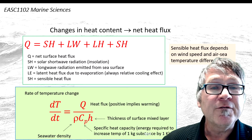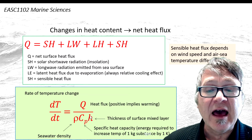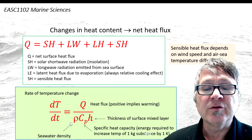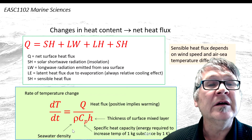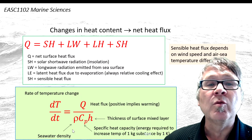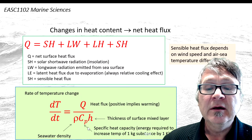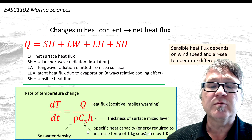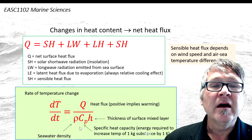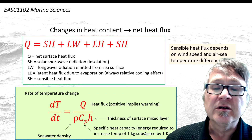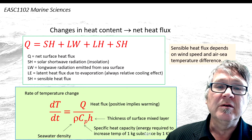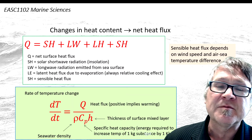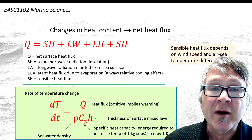How fast the temperature will decrease or increase depends on the other properties shown here. Rho is the seawater density, which is almost constant. Cp is the specific heat capacity — this means how much energy you need to change the temperature of one kilogram of substance by one degree, or one Kelvin.